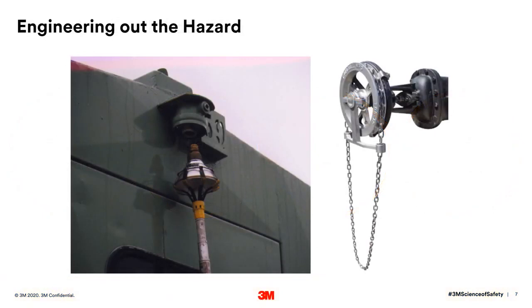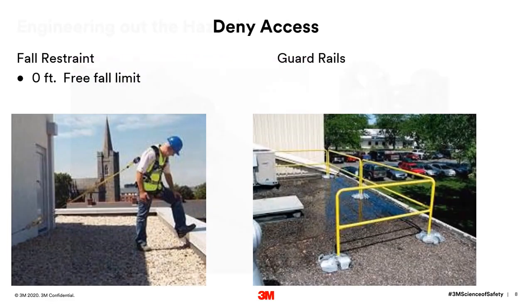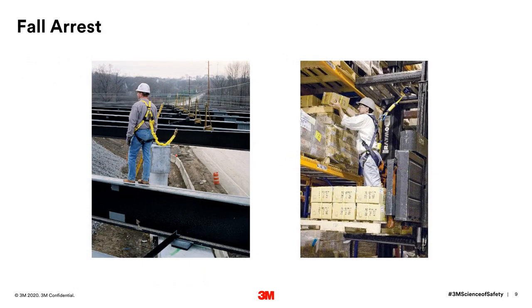Here you can see some examples of engineering out the hazard. On the left is the pole with the adapter to change a light bulb. On the right is a chain on a valve. These are examples of denying access: guardrail systems prevent the worker from accessing the hazard, and fall restraint limits fall distances because workers can't reach the edge. Fall arrest is the last resort — a system that allows a worker to fall and is designed to reduce the impact forces placed on the worker's body.